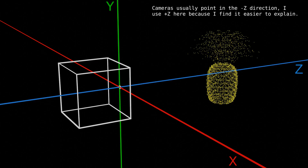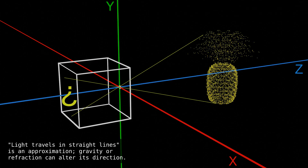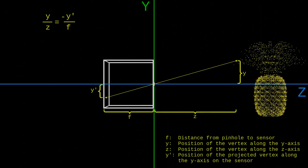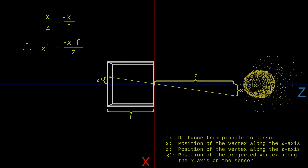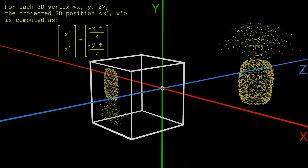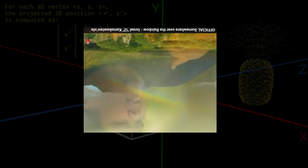To obtain the projected 2D image, we calculate how light would reach the sensor for each vertex. Light travels in straight lines, so if we look sideways along the ZY plane, we see that the trajectory of a light ray traces similar triangles, which lets us calculate the position of the projected point along the Y axis. We do the same thing looking the other way to find the position along the X axis. Doing this for all points, we obtain a projection of the point cloud. The image is inverted because that's how optics work — our brains or cameras just flip the image afterwards.